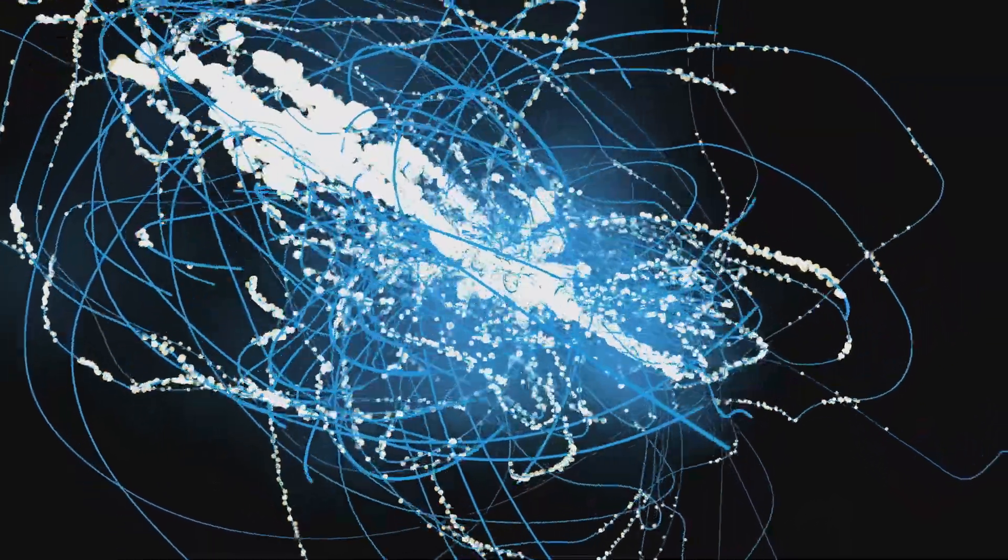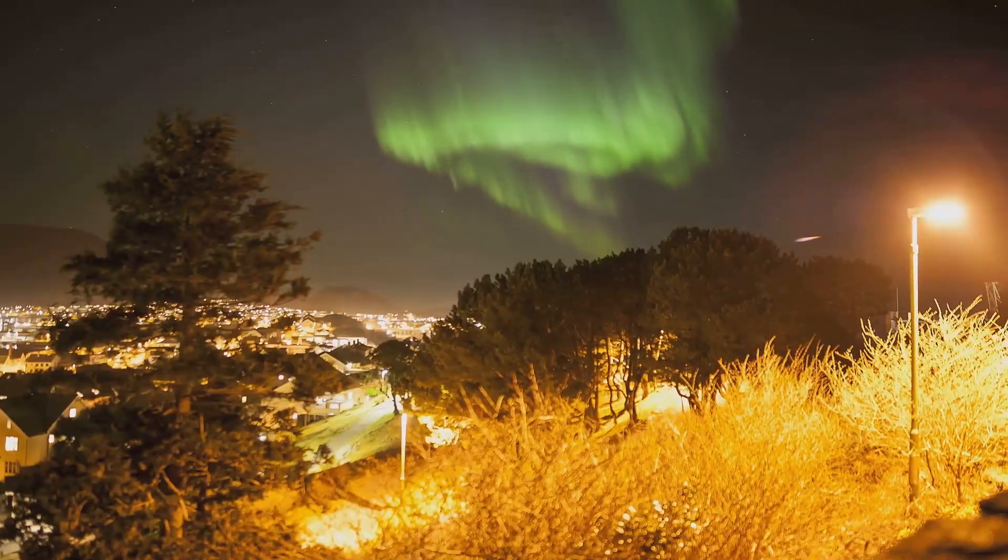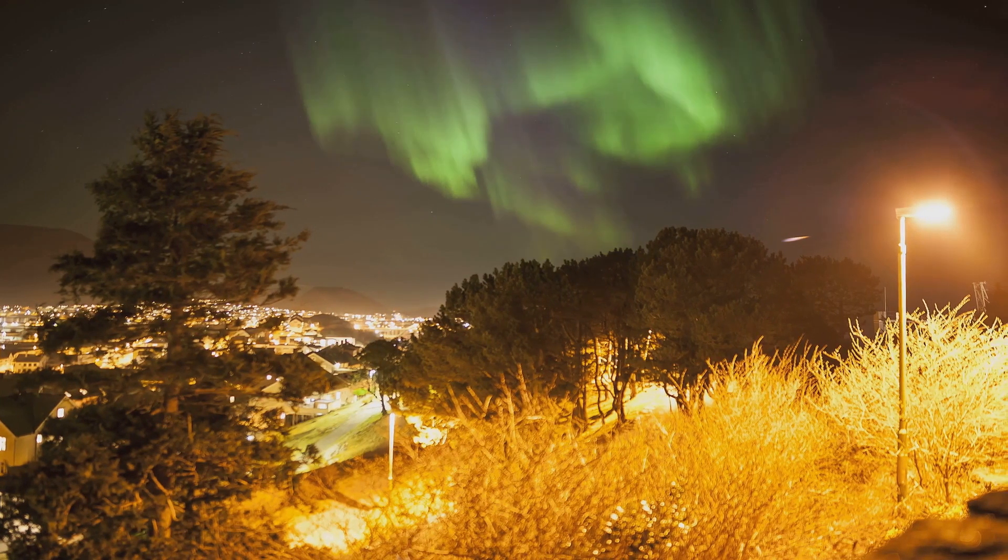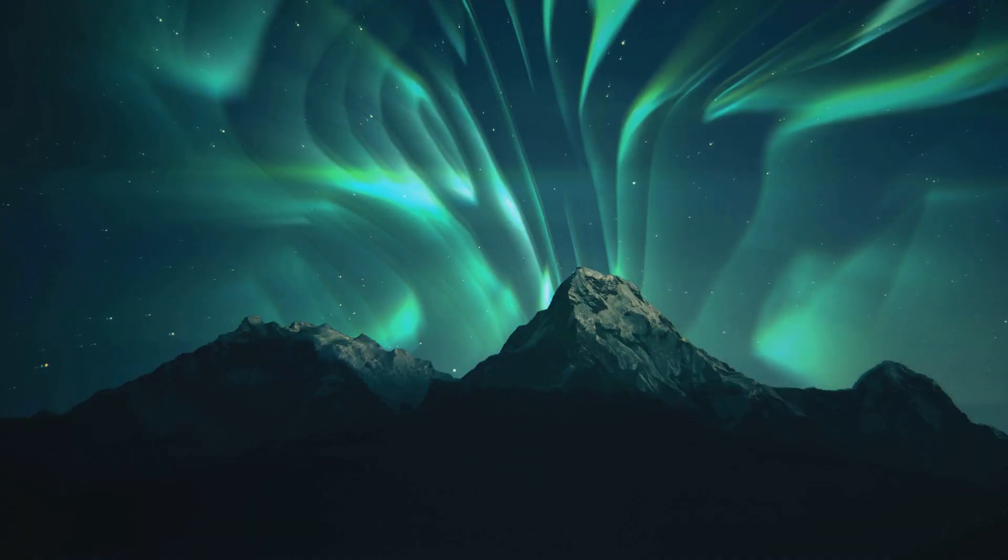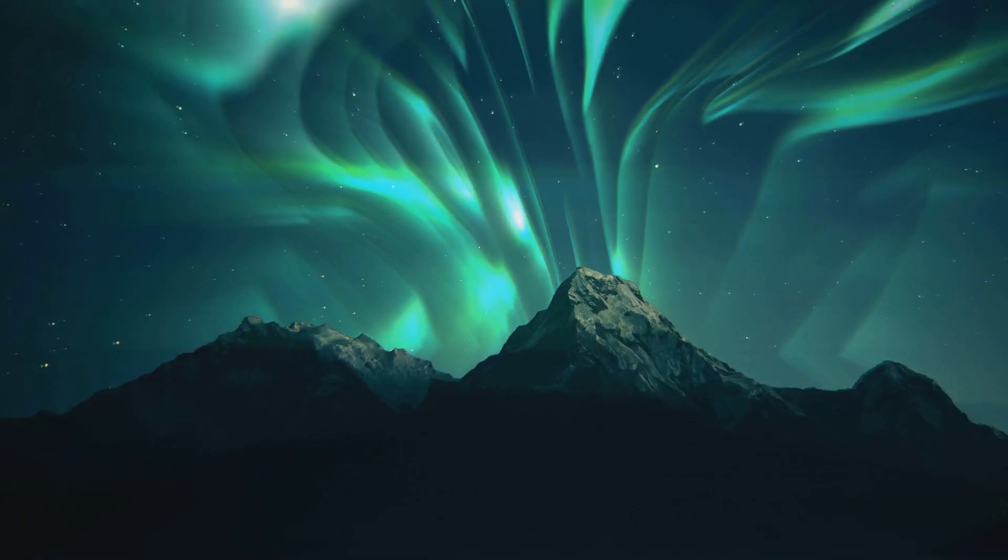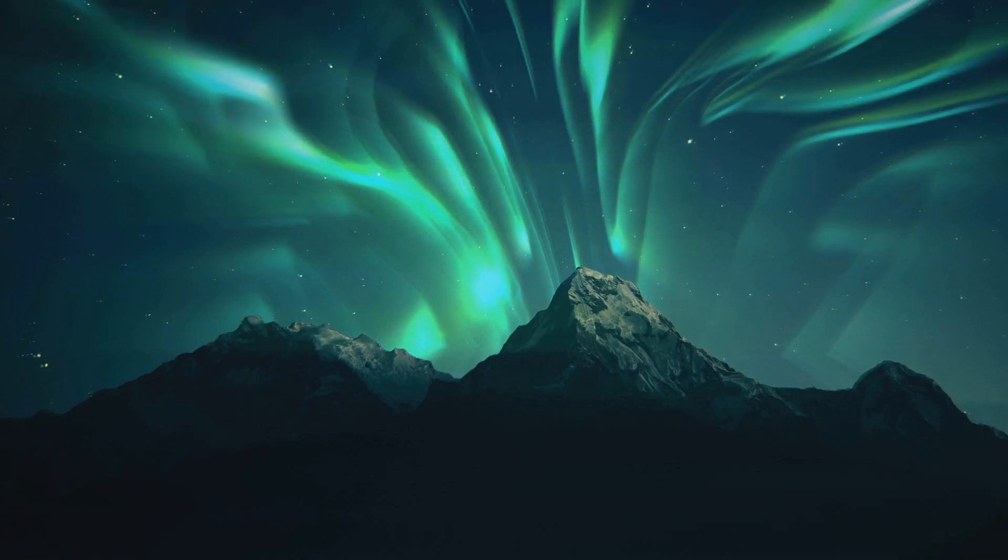However, the universe had a different plan. The solar wind, the stream of charged particles flowing out from the Sun, was less intense than anticipated. As a result, we only experienced a minor geomagnetic storm, or a G1 storm, according to the folks at spaceweather.com.